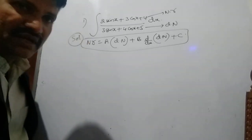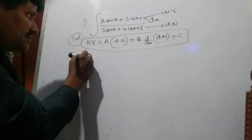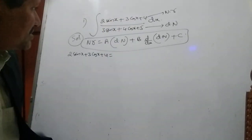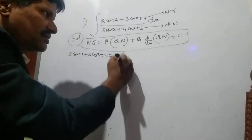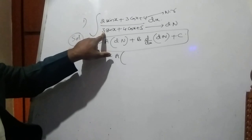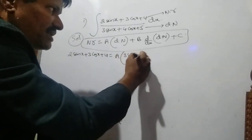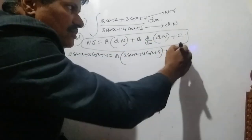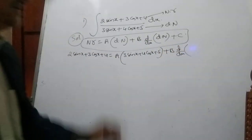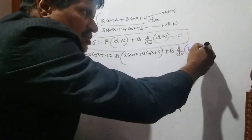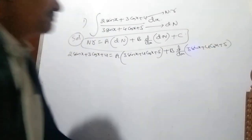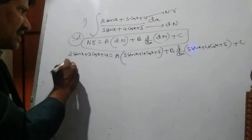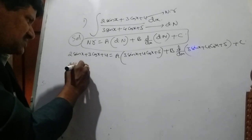The numerator is 2 sin x + 3 cos x + 4. This equals a times the denominator (which is 3 sin x + 4 cos x + 5), plus b times d/dx of the denominator (3 sin x + 4 cos x + 5), plus c.